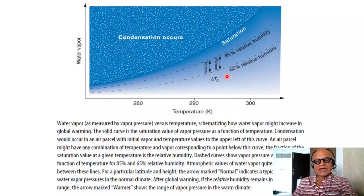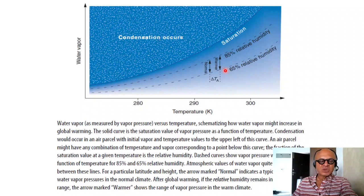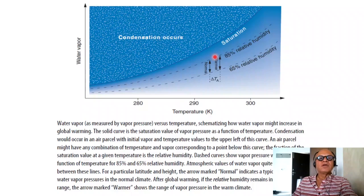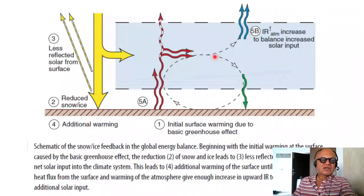For a particular latitude and height, the arrow marked 'normal' indicates the typical range of vapor pressure in the normal climate. After global warming, if the relative humidity remains in the same range, the arrow marked 'warmer' shows the range of vapor pressure in the warmer climate. The distance between the two relative humidity curves increases towards warmer temperatures, so specific humidity or water vapor is going to increase as well — which is what we often invoke for more extreme events, stronger cyclones, and so forth.